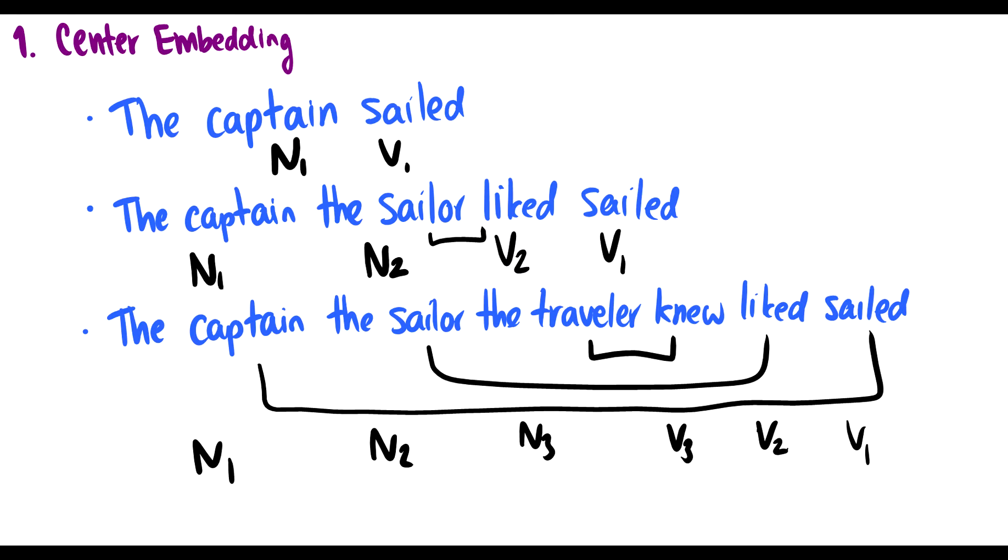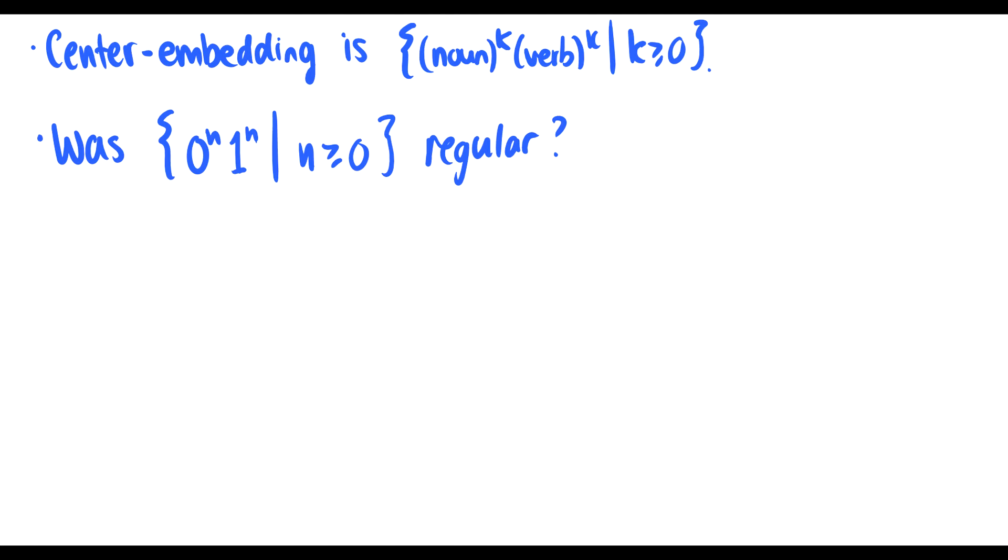We can keep embedding our nouns and verbs inside each other. We see N1, N2, N3, V3, V2, V1, and this is grammatical in English. Center embedding is some number of nouns, then some number of verbs, and they're both equal to each other.